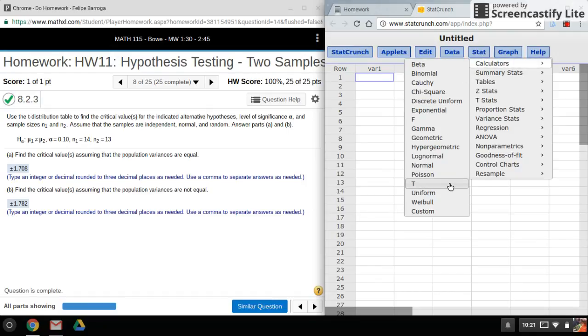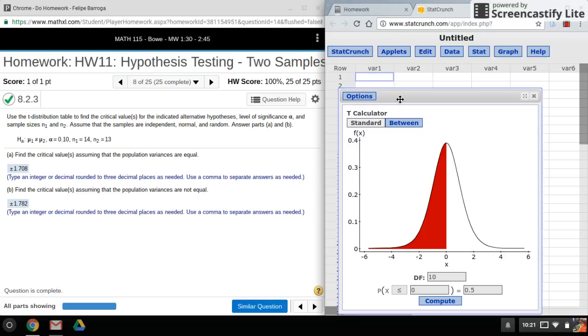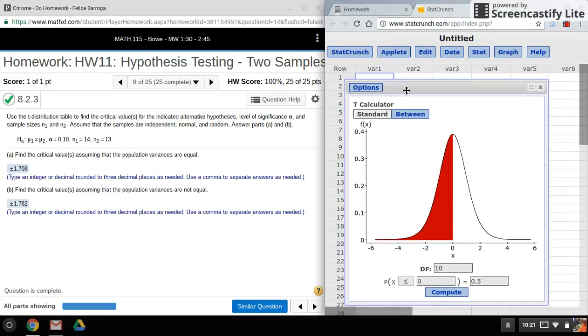The way we do the t-test is similar to the z-test. Our alternative hypothesis will tell us how many tails and in which direction. So not equal to will tell us that it's a two-tailed test.